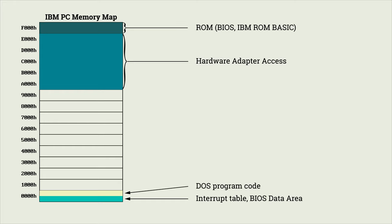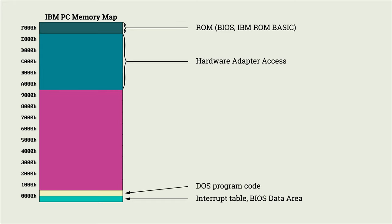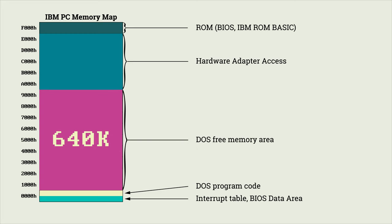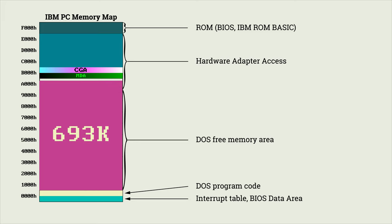The DOS 640K limit exists because 640K is the maximum range software is supposed to be loaded in. Segments A000 and B000 were suggested to be reserved for video display hardware. However, if you have no video card in those areas, it's totally possible to map RAM there, allowing the extension of the DOS lower memory space.